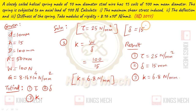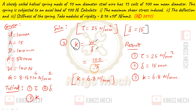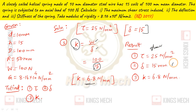After getting the value of delta, stiffness K equals W by delta. W = 100, delta = 15, we get K = 6.8. The results are: shear stress tau, deflection delta, and stiffness K. These are easily directly solvable problems.